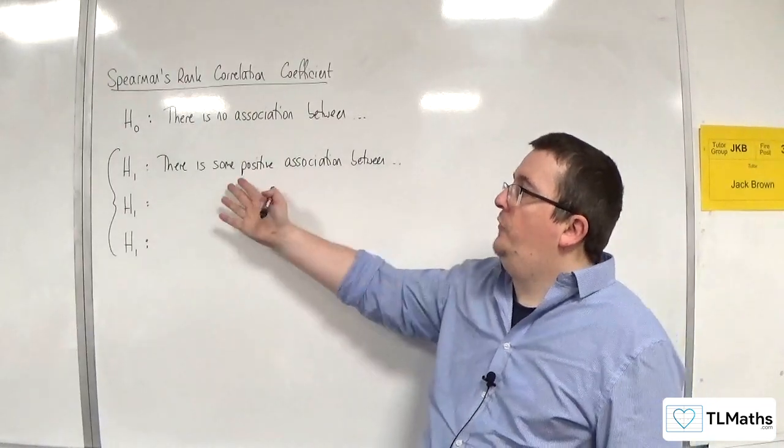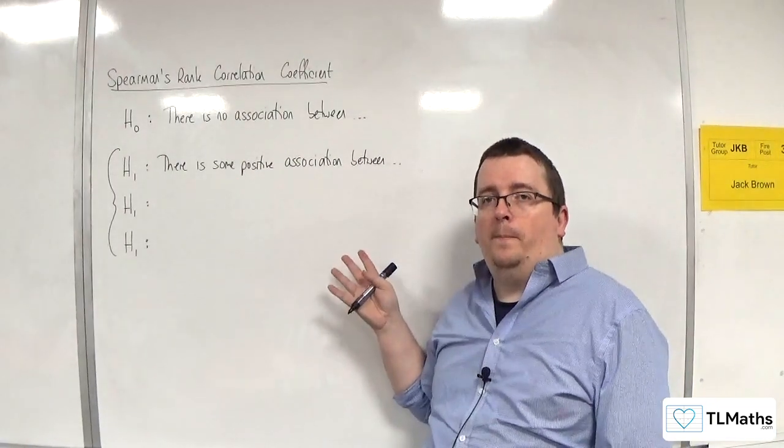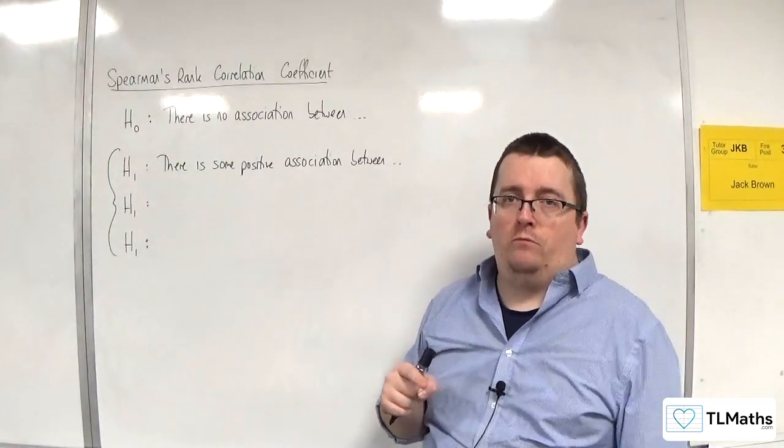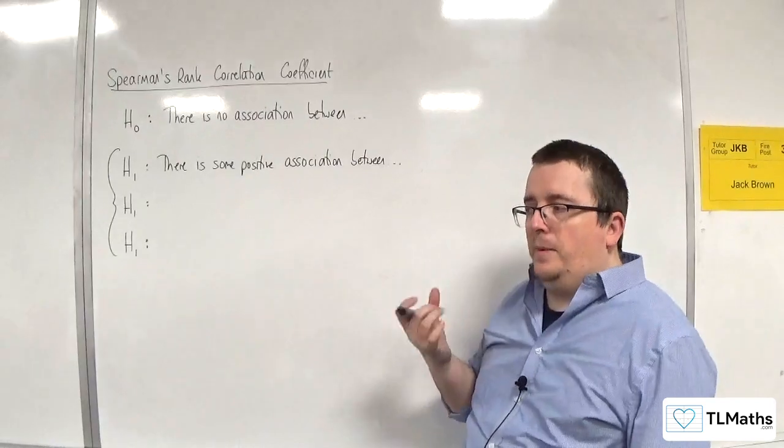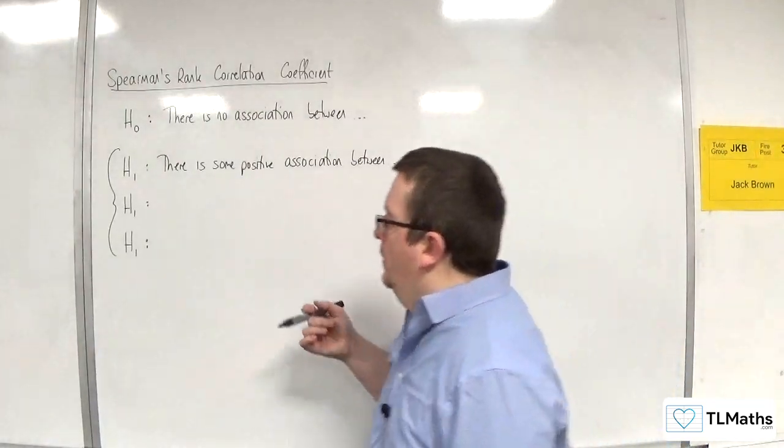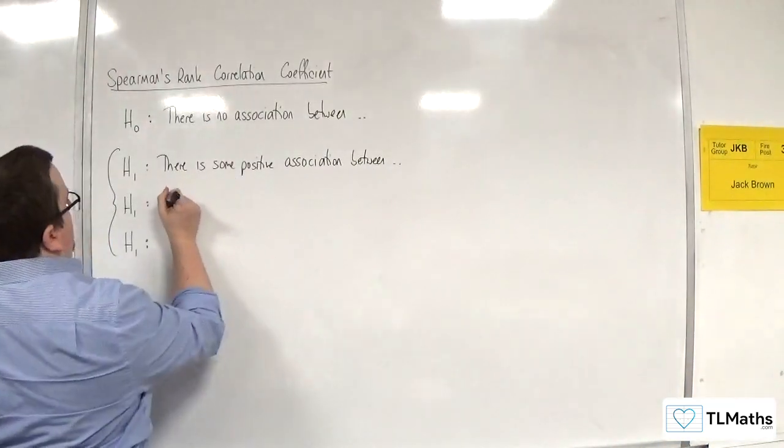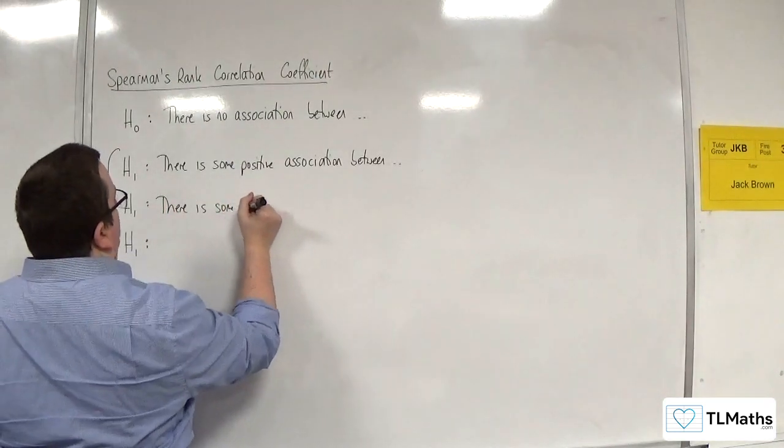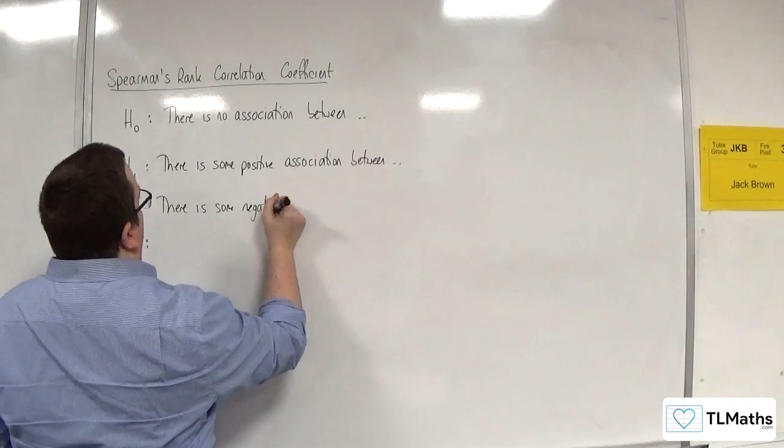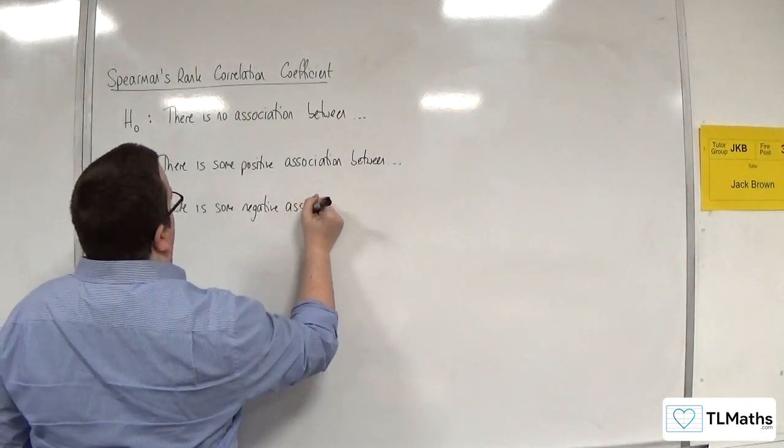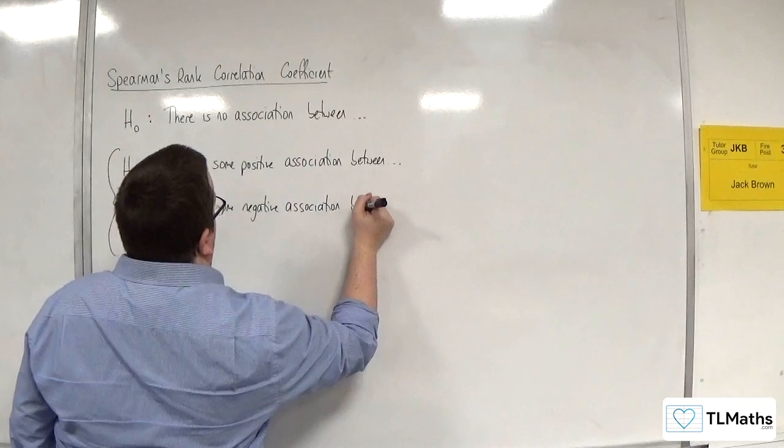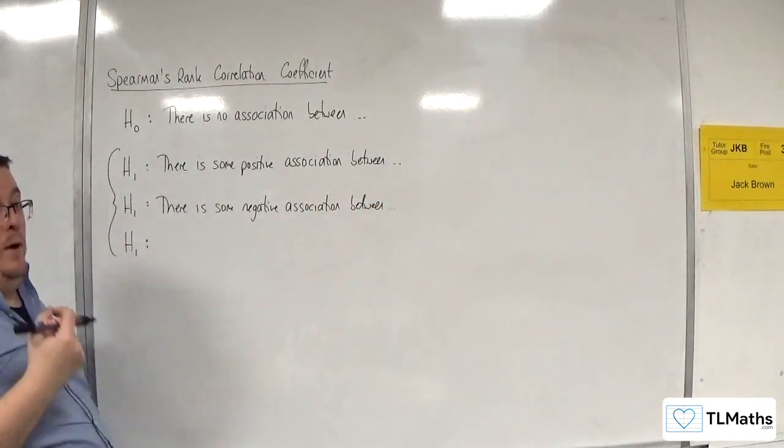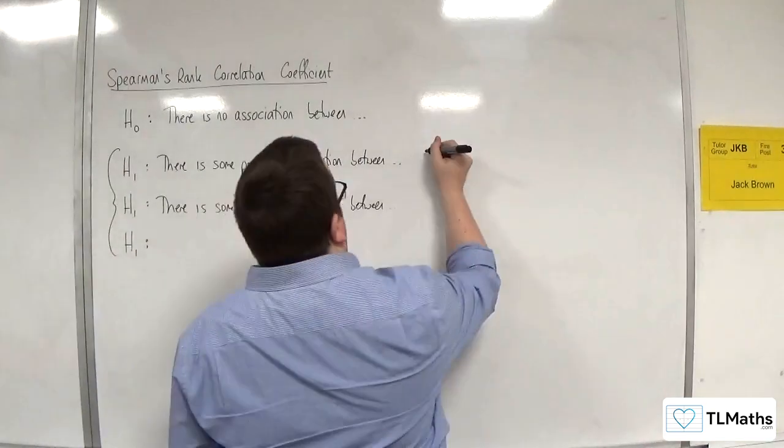Notice how we're talking about some positive association, rather than there is a positive association. Just be a little bit careful with the wording. Alternatively, there is some negative association between the variables. Both of those would be one-tailed tests.